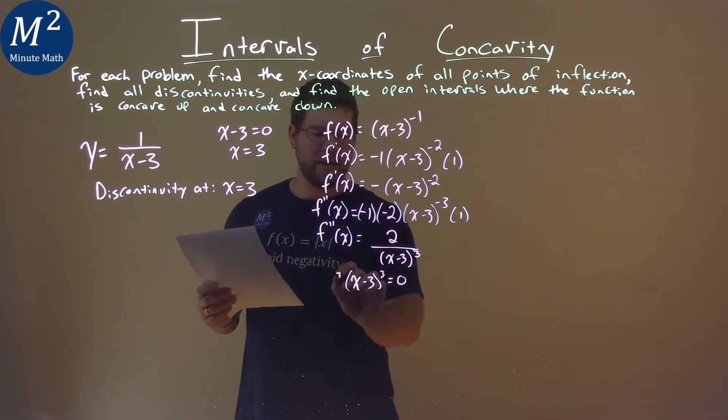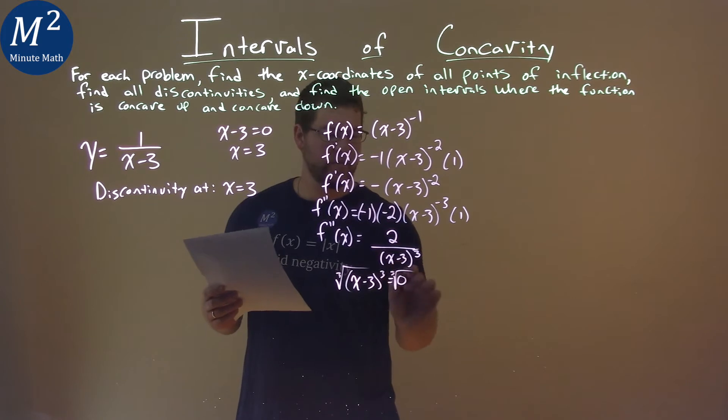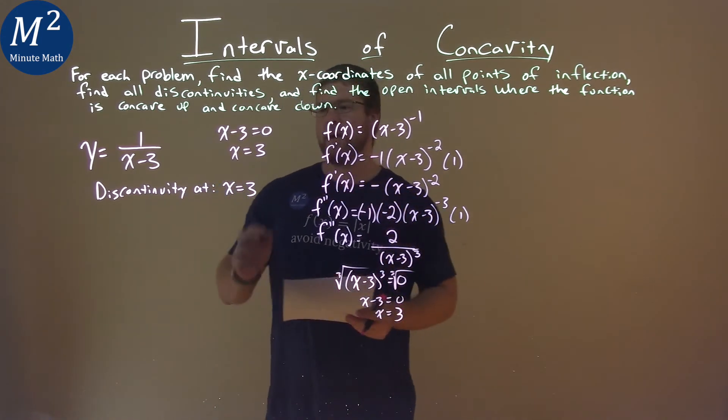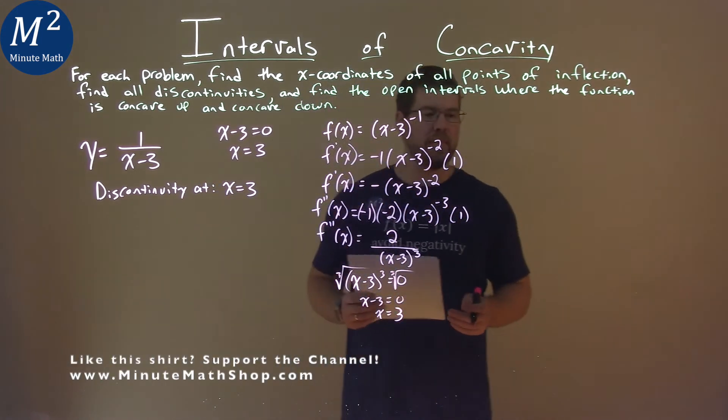Well, third root of both sides, third root of zero, so we have x minus 3 equals zero, and x equals positive 3. And notice we also had that with our discontinuity. Same point, keep that in mind.